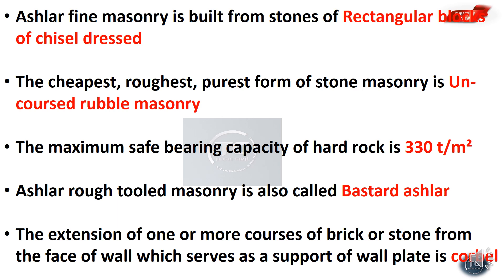The maximum safe bearing capacity of hard rock is 330 ton per meter square. Ashlar rough tool masonry is also called bastard ashlar.